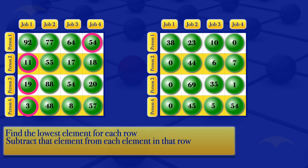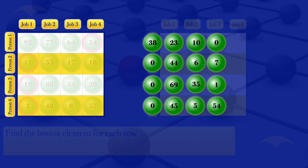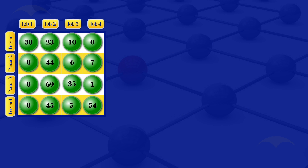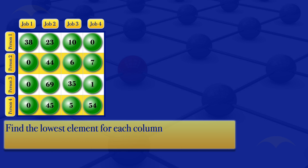That completes the row-reduced table. The next step is to find the lowest element for each column. For column one, the lowest element is 0. For column two, it is 23. For column three, it is 5. For column four, it is 0.